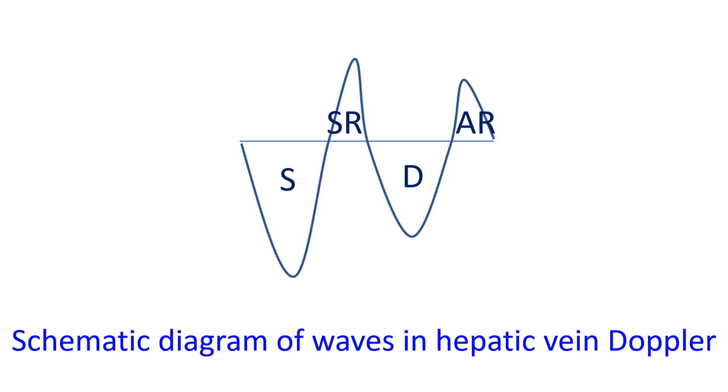D velocity occurs during right atrial emptying in diastole. A small AR wave is seen in late diastole when atrial contraction completes right ventricular filling along with small backflow into the hepatic veins.